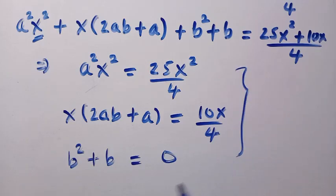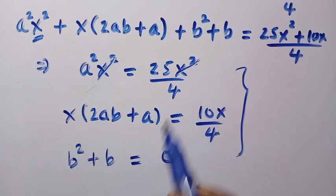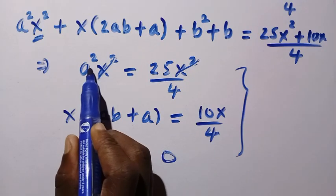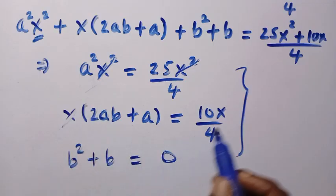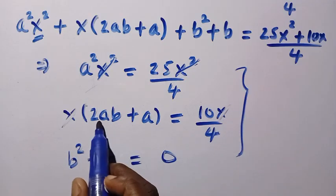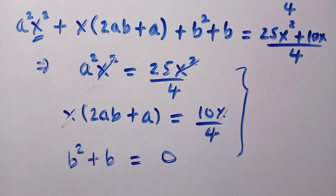Here are the three cases of our comparisons. Let's try and find a and b from this. For the first one, let's say we cancel x squared. We are left with a squared equals 25 divided by 4. And here, if we cancel x, we are left with 2ab plus a equals 10 divided by 4.